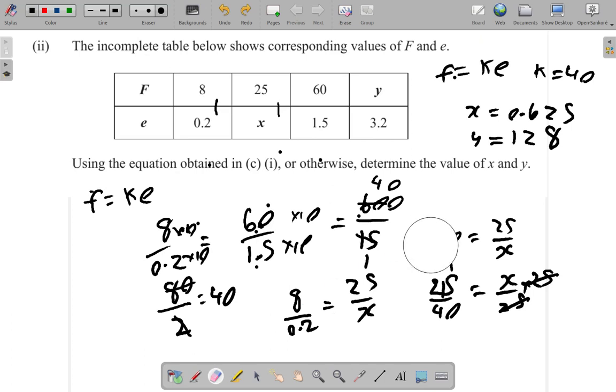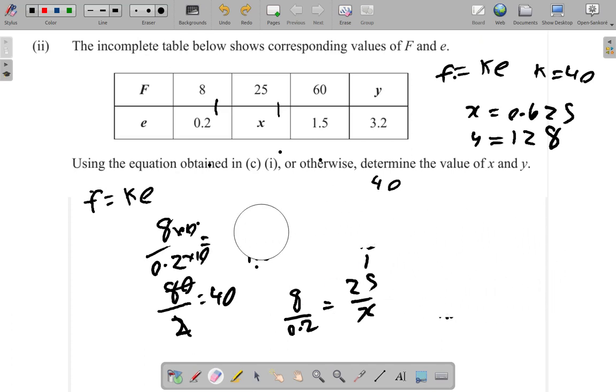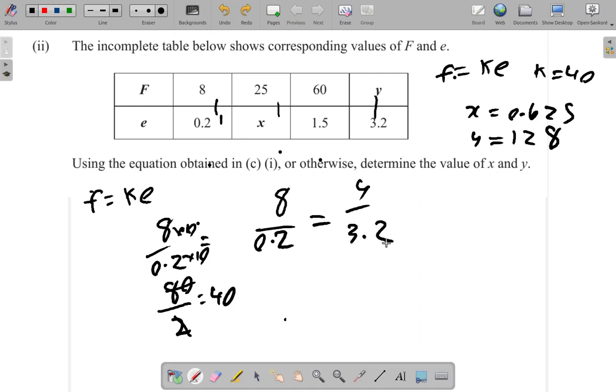I could also consider finding y this way. The ratio should be the same. 8 over 0.2 for this here is equal to y over 3.2. 8 over 0.2, we know that that is 40. 40 is equal to y over 3.2. 40 over 1 is y over 3.2. If you multiply by 3.2, we get y equal. Multiply by 3.2.